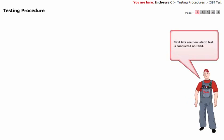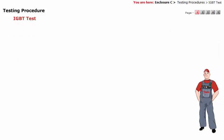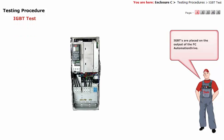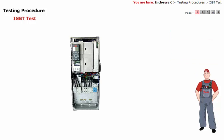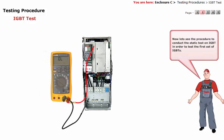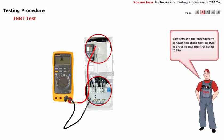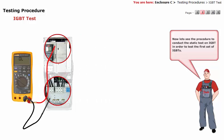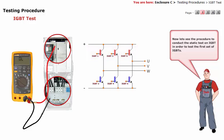Next, let's see how static test is conducted on IGBT. IGBTs are placed on the output of the FC automation drive. Let's see the procedure to conduct the static test on IGBT in order to test the first set of IGBTs.